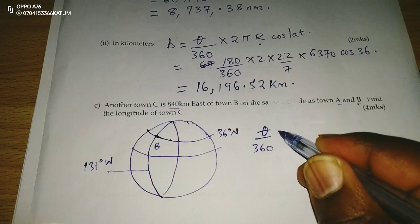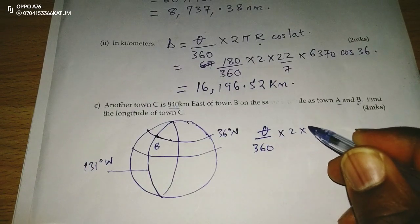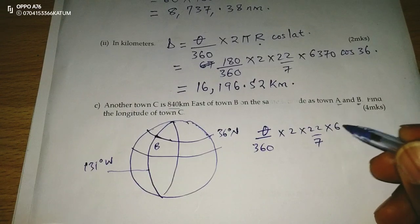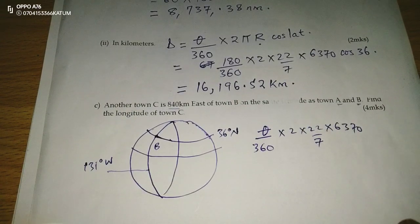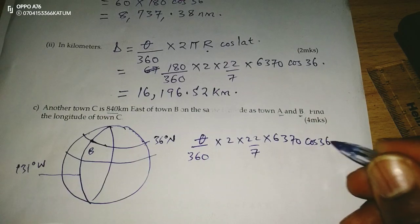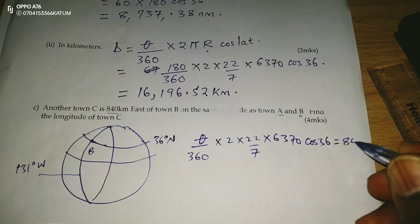divided by 360, multiplied by 2, times 22 out of 7, times 6370, the cosine of 36.